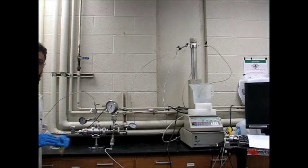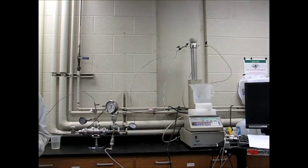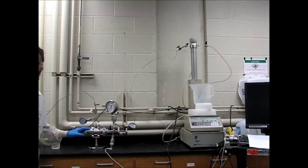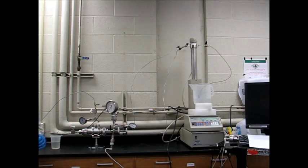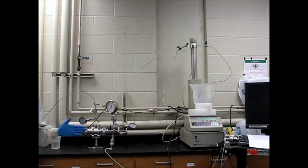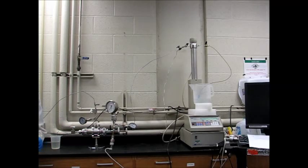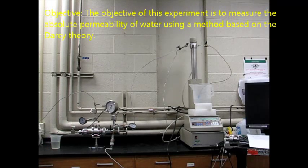The core sample that we are going to use here is 2.5 inches diameter and 7 inches length. The porosity of our sample is 15 percent. The objective of today's lab is to measure the absolute permeability of water using a method based on Darcy's theory.